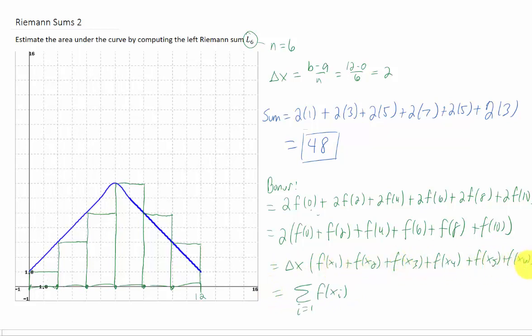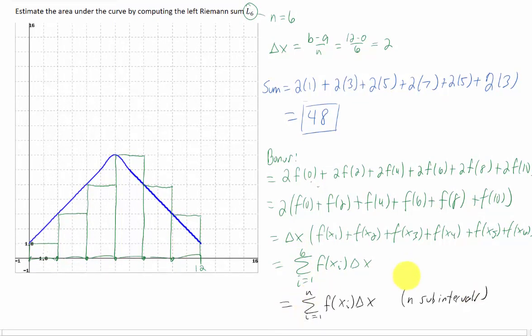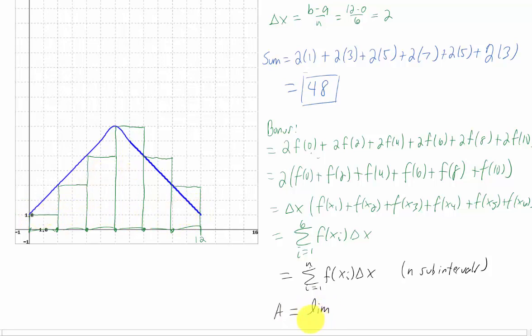Our subscript on x goes from 1 to 6, so we can sum from 1 to 6 f of x sub i delta x. Speaking more generally, if instead of 6 subintervals we had n subintervals, our approximation would look just like this. The more rectangles we use, the better our approximation. If we increase n until n goes to infinity, that gives us the exact area. An infinite number of rectangles would give the exact area under this curve, which we represent with a limit.